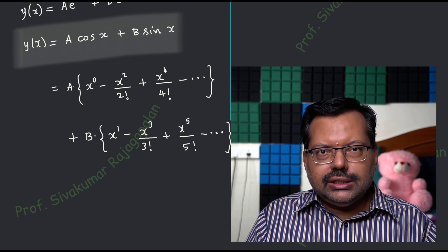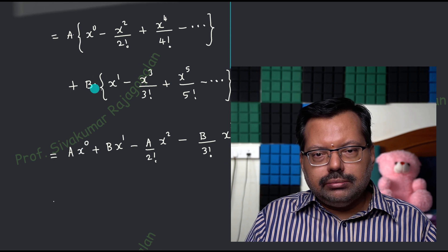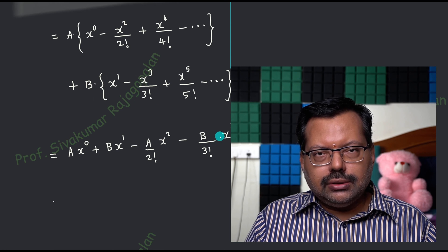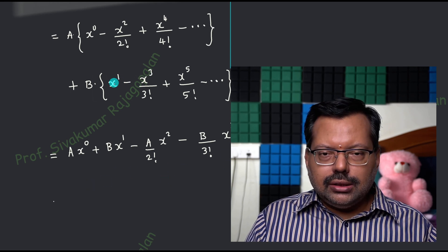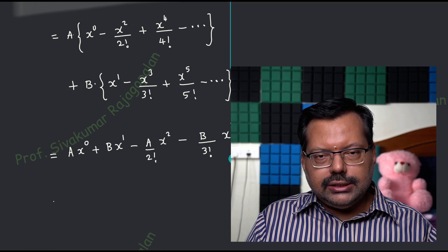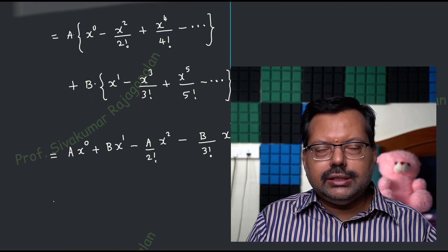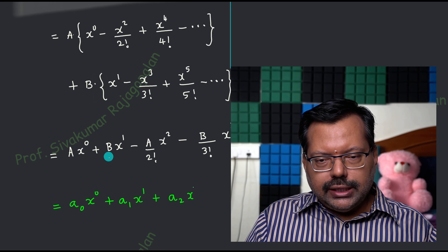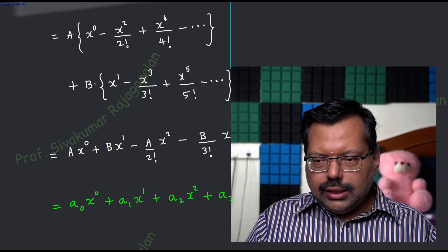We will merge them into a single infinite series. You can see: a·x⁰ is the first term, b·x¹ is the second term, then a·x²/2! is the third term, then b·x³/3! is the next term, and so on, taking care of the alternating plus-minus sign. We arrange in such a way that the powers of x are uniformly increasing — zeroth, first, second, third, fourth power, etc. So a₀ is the first constant, a₁ the second, a₂ the third, a₃ = b/3!, and so on.